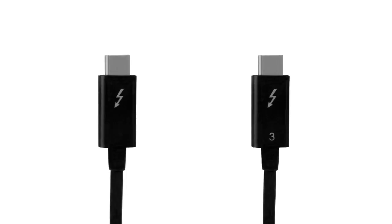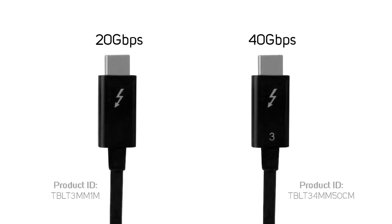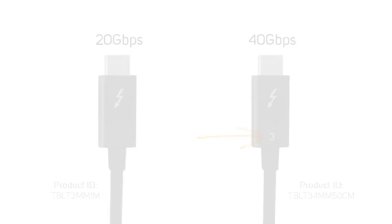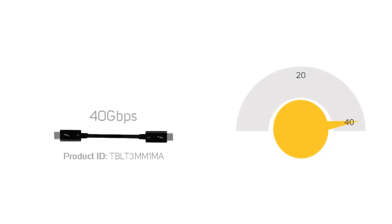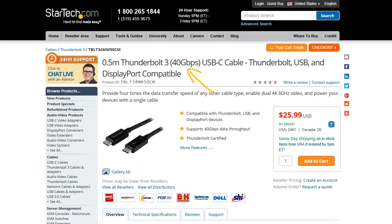Currently, Thunderbolt 3 cables have one of two symbols: the 20 gigabits per second symbol and the 40 gigabits per second symbol. The 40 gigabits per second symbol has the number 3, whereas the 20 gigabits per second symbol does not have the number 3. Not every cable can support 40 gigabits per second of total bandwidth. To confirm the capabilities of your Thunderbolt 3 cable, refer to the information provided by the manufacturer.